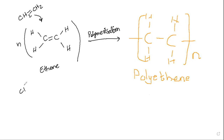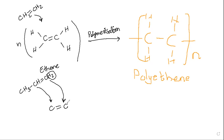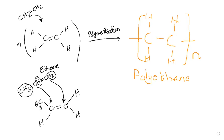For propene, take the first carbon atom, then the double bond and the second carbon atom. The first carbon atom has two hydrogen atoms. The second carbon atom has one hydrogen atom but one methyl group. You may write CH₃ or H₃C — both are considered correct. That's what we draw for propene, and the name of the product is polypropene.